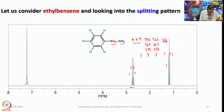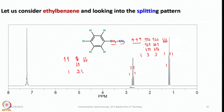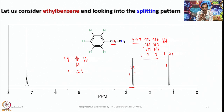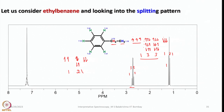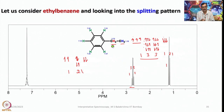How the 1:2:1 triplet arises: CH2 can have both protons up, one up and one down, or both down, giving a 1:2:1 ratio. We can calculate relative intensities this way, but for larger multiplets we use Pascal's triangle. The chemical shifts for ethyl benzene show the CH2 at 2.72 and the CH3 at 1.18.